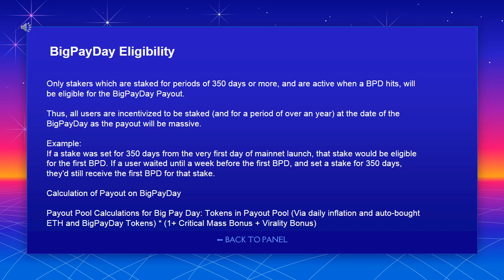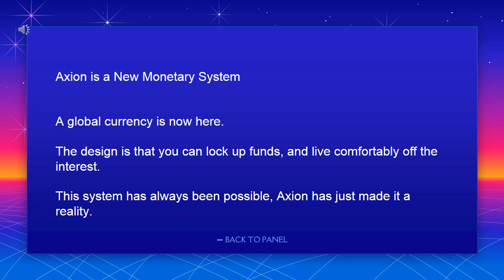Calculation of payout on Big Pay Day: payout pool = (tokens in payout pool via daily inflation and auto-bought ETH) + (Big Pay Day tokens) × (1 + critical mass bonus + virality bonus). Axion is a new monetary system — a global currency is now here. The design is that you can lock up funds and live comfortably off the interest. This system has always been possible; Axion has just made it a reality.